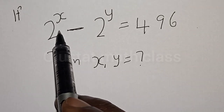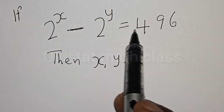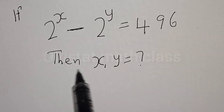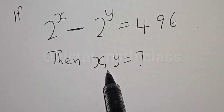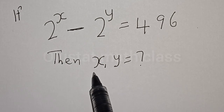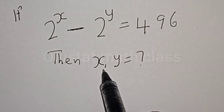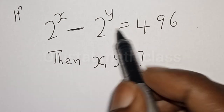If 2 raised to power x minus 2 raised to power y is equal to 496, then what is the value of x and y? Hi everyone, welcome to my class, the Olusta class, where we teach mathematics and statistics. We quickly want to find the value of x and y from this given exponential equation.